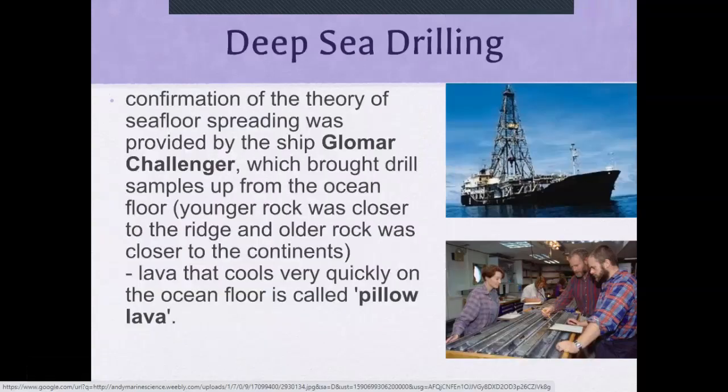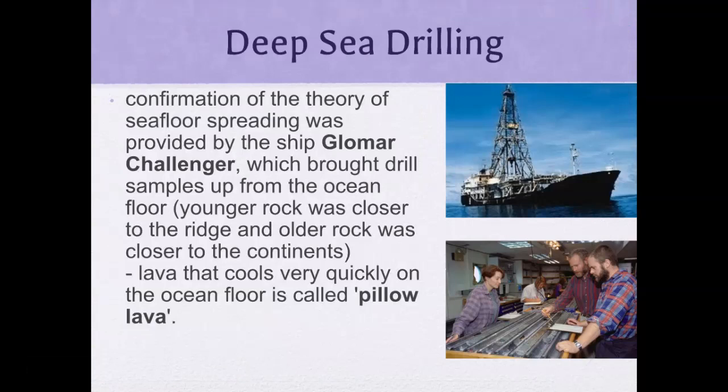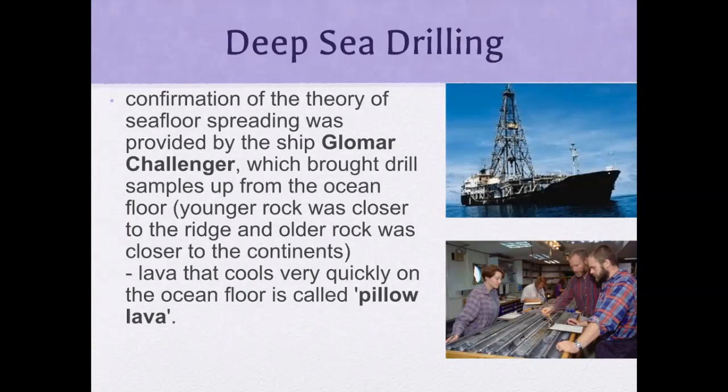Another piece of evidence came from deep sea drilling. Confirmation of the theory of sea floor spreading was provided by the ship Glomar Challenger, which brought drilling samples up from the ocean floor. Younger rock was closer to the ridge and older rock was closer to the continents — because one side comes up and moves apart, so the older stuff is closer to the continents on each side and the newer stuff is in the centre. That made sense for seafloor spreading.